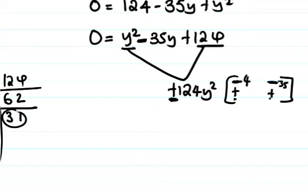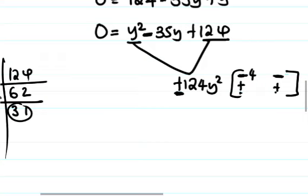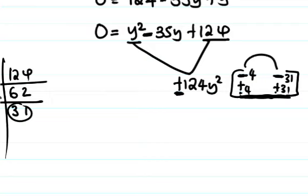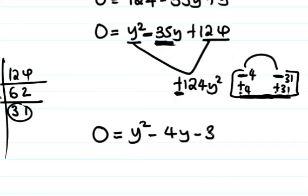31 and 4, 31 plus 4 equals 35. The factors are negative because they must be minus 4 and minus 31. So 0 equals y squared minus 4y minus 31y plus 124.